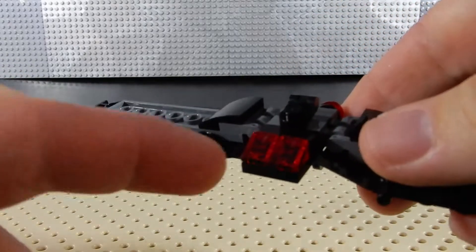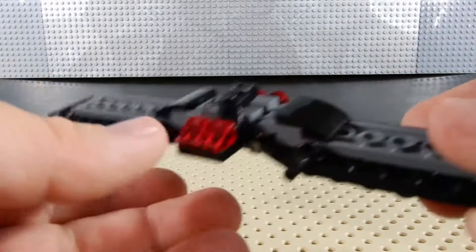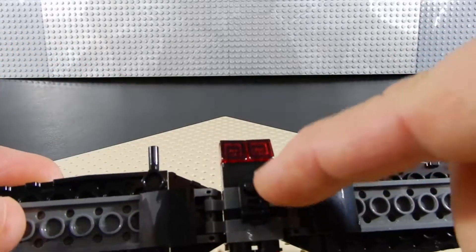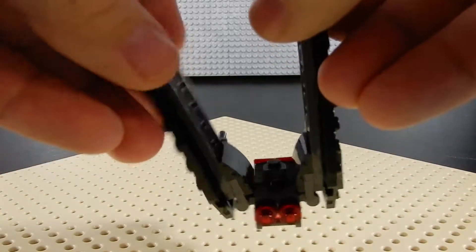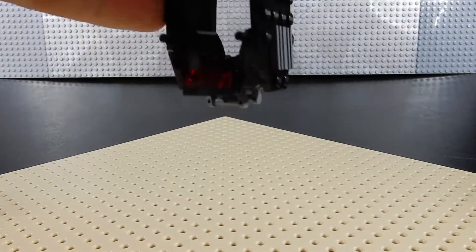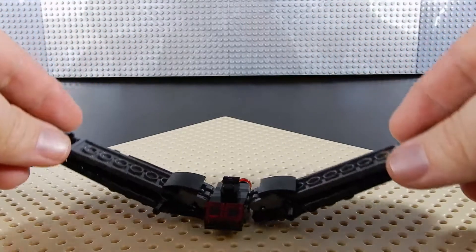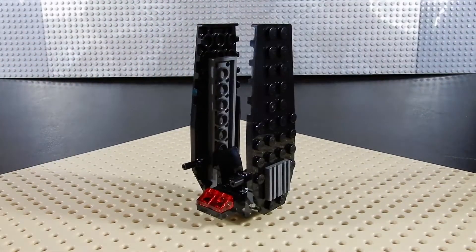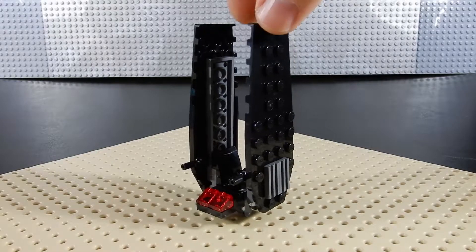The cockpit piece has that nice trans-red, and we have some trans-red thrusters on the back. There's a hatch piece on the top, and we have some landing gear on the bottom. Just being able to open up and close the wings is a really nice improvement over the last version.